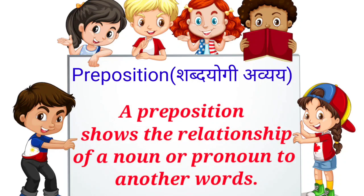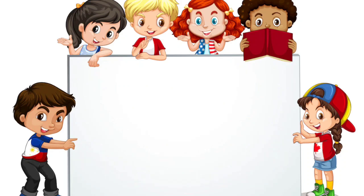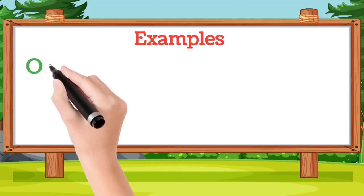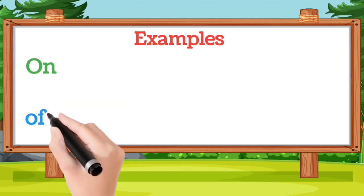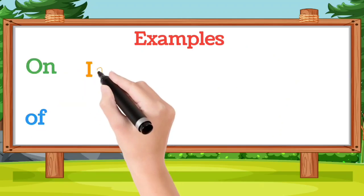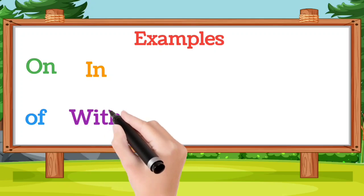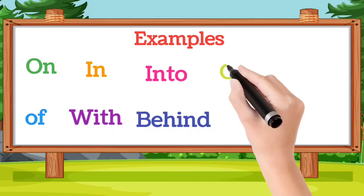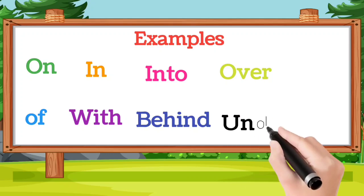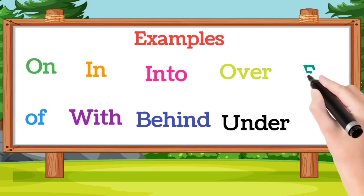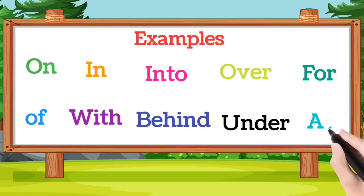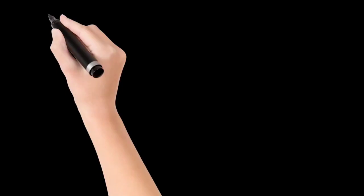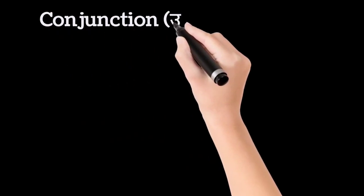The next one is preposition — 'shabdayogi avyay.' A preposition shows the relationship of a noun or pronoun to another word. Examples are: on, of, in, with, into, behind, over, under, for, at.